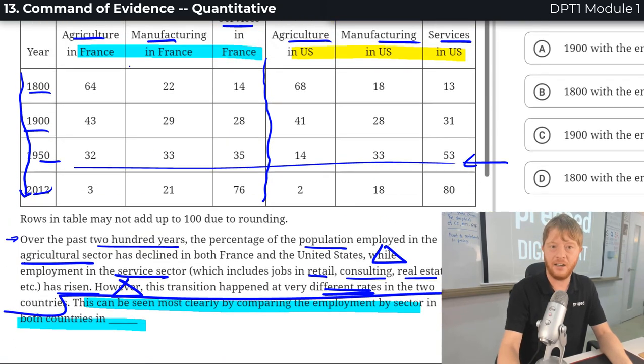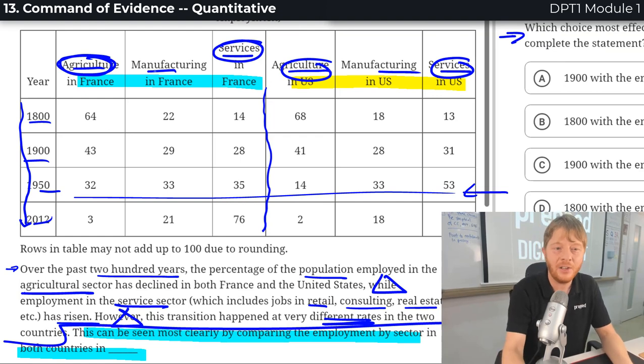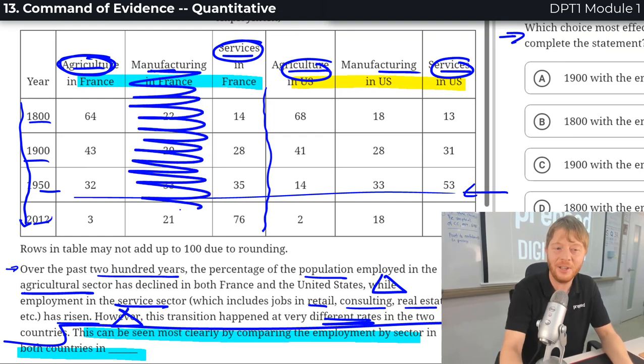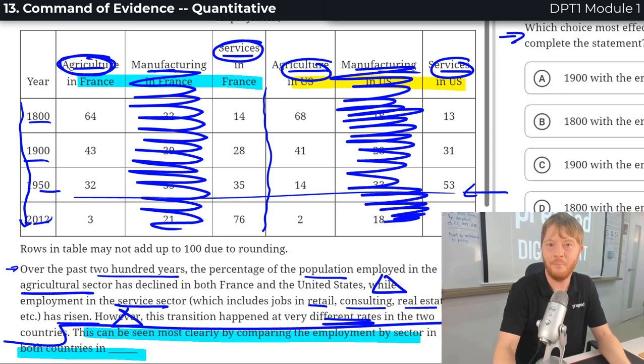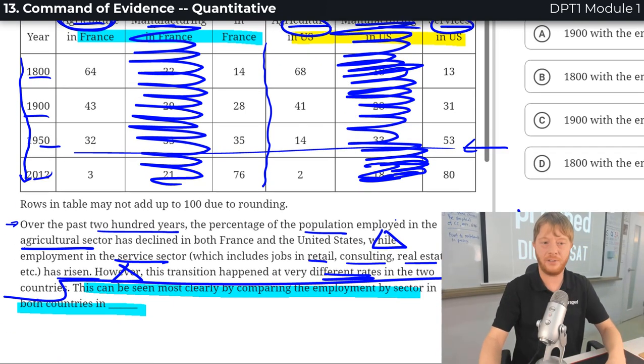So now let's be clear. We're comparing agriculture and services in both countries. Oh, this is interesting. Check this out. So we don't actually really need to even really consider manufacturing unless I'm misreading something. Looks like we're just comparing those two.